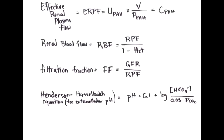What is the equation of effective renal plasma flow? The equation of effective renal plasma flow is the urine concentration of the paraaminohippurate times the urine flow rate, over the plasma concentration of the paraaminohippurate. In other words, the effective renal plasma flow equals the clearance of paraaminohippurate.